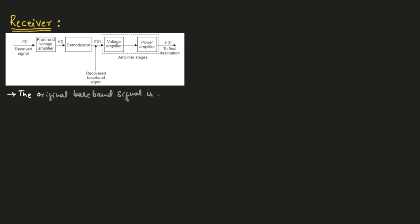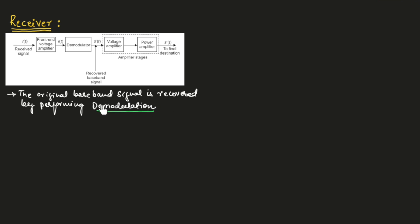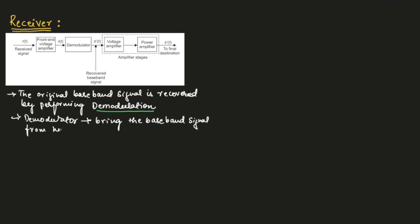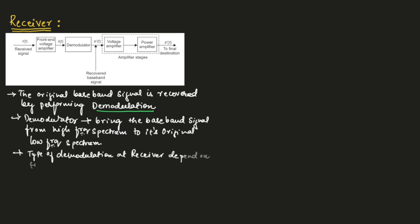The original baseband signal is recovered by performing a process known as demodulation. Demodulation is the opposite of modulation — modulation is performed at the transmitter end and demodulation is performed at the receiver end. The function of the demodulator is to bring the baseband signal from the high frequency spectrum to its original low frequency spectrum.